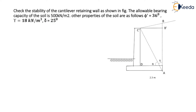Check the stability of the cantilever retaining wall as shown in the figure. The allowable bearing capacity of the soil is 500 kilonewton per meter square. Other properties of the soil are as follows: phi dash is 36 degree, gamma is 18 kilonewton per meter cube, and delta is 25 degree.